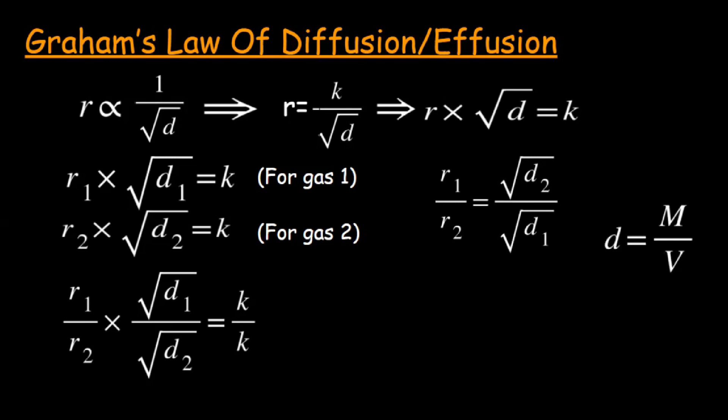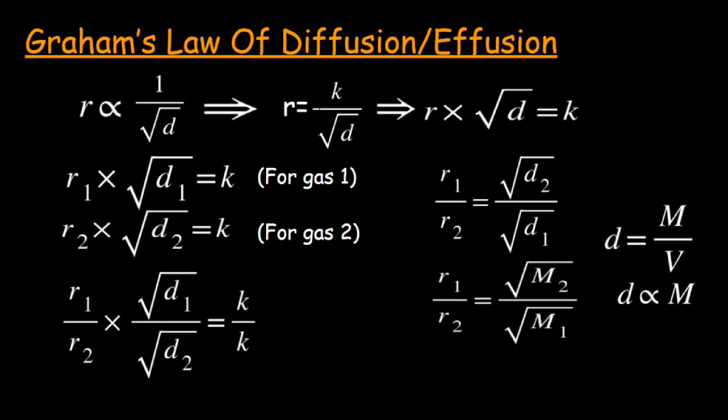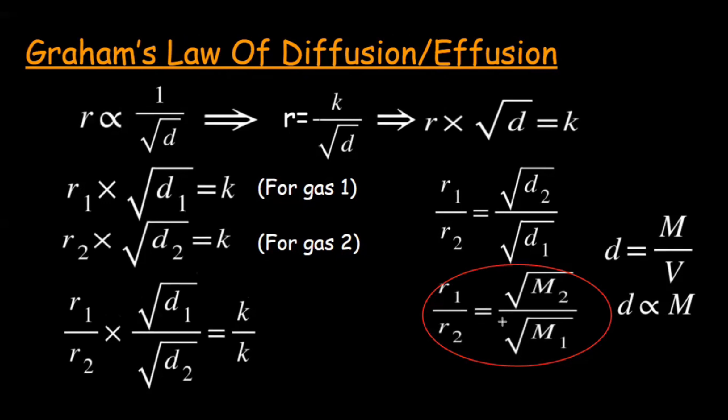Students, keep in mind that in Graham's law, volume, temperature, and pressure are all kept constant. Therefore, density is directly related to molar mass. We can replace density with molar mass, giving the final equation: r₁/r₂ = √M₂ / √M₁. This tells us that the rate of diffusion or effusion is inversely related to the molar mass of the gas.